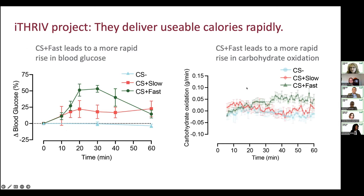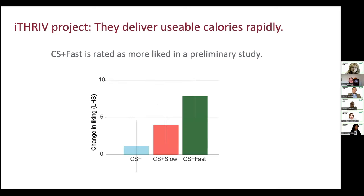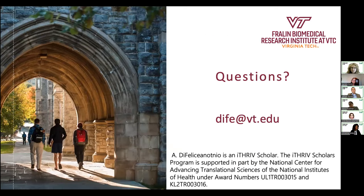When we asked people how much they like the flavor — there are no calories in the flavor, they're just tasting it — they tended to like the flavor paired with fast calories more than the one paired with slow calories and more than the one paired with no calories. This provides preliminary evidence that rate of absorption matters and could explain why these foods are so over-consumed.